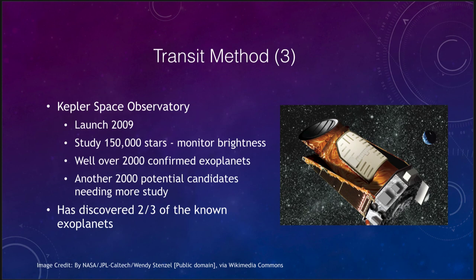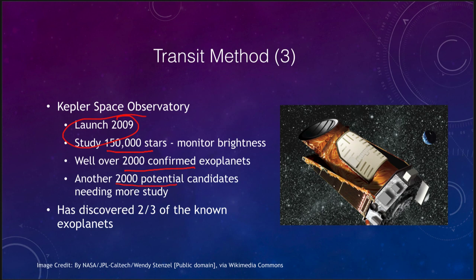The key instrument for the transit method has been the Kepler Space Observatory, launched in 2009. It studies 150,000 stars in a small portion of the sky and has confirmed over 2,000 exoplanets, with 2,000 more as potential candidates needing additional study. At this point it has discovered two-thirds of the known exoplanets. All it does is look at these stars over and over again, measuring their brightness and watching for those little dips that signify a planet has passed in front of the star.